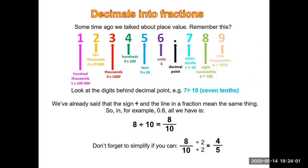Decimals into fractions: Some time ago we talked about place value. Remember these? Hundred thousand, ten thousand, thousands, hundreds, tens, units, have your decimal point, seven tenths, eight hundredths, nine thousandths. Look at the digits behind the decimal point, e.g., seven divided by ten, seven tenths. The sign divide and the line in a fraction mean the same thing. So in 0.8, all we have is 8 divided by 10, so we have 8 tenths. Don't forget to simplify if you can. Eight out of ten simplifies to four fifths.